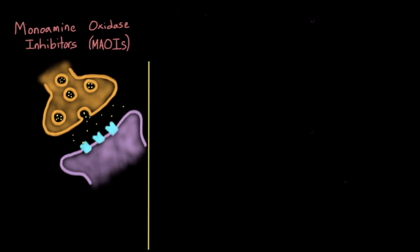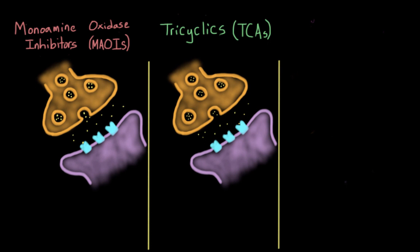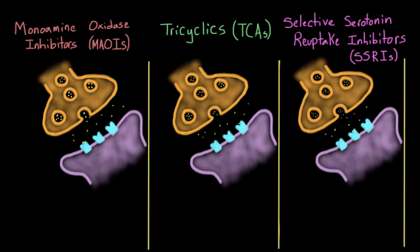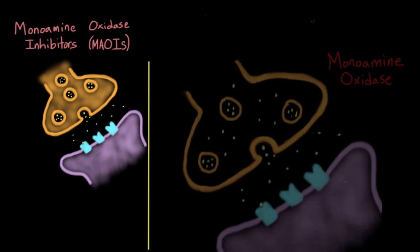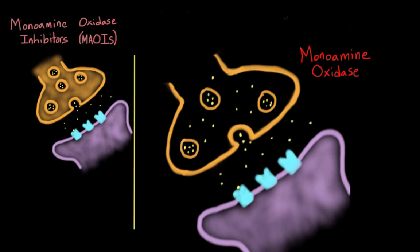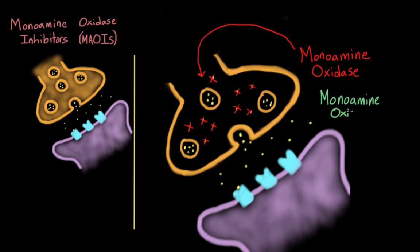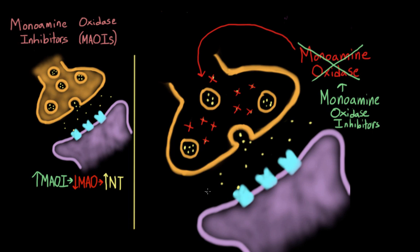We're going to cover three classes of antidepressants: monoamine oxidase inhibitors, or MAOIs; tricyclic antidepressants, or TCAs; and selective serotonin reuptake inhibitors, or SSRIs. Let's start with MAOIs. The clue to how they work is in the name. Monoamine oxidase is an enzyme that breaks down neurotransmitters that aren't stored in vesicles — it's a kind of cellular housekeeping. MAOIs inhibit this enzyme, which increases the amount of neurotransmitter capable of being released into the synapse, making it more likely that they will dock onto the postsynaptic cell and cause an action potential.